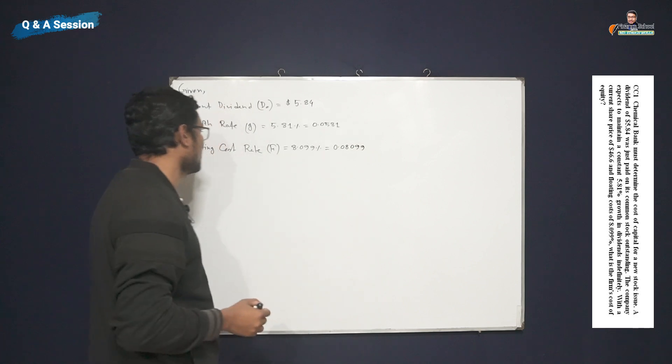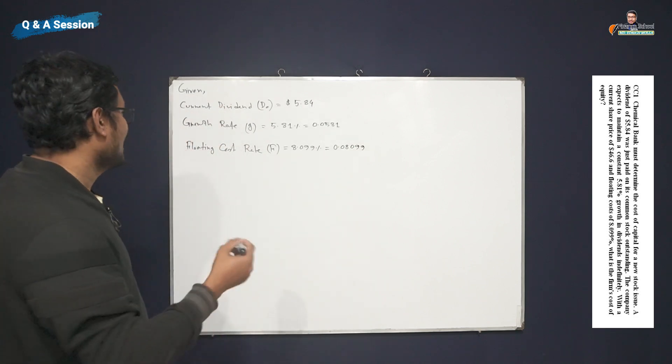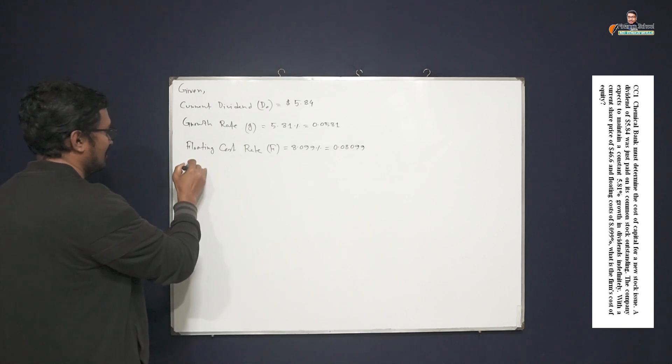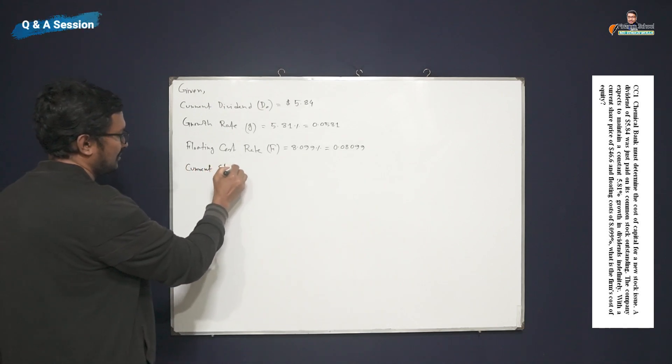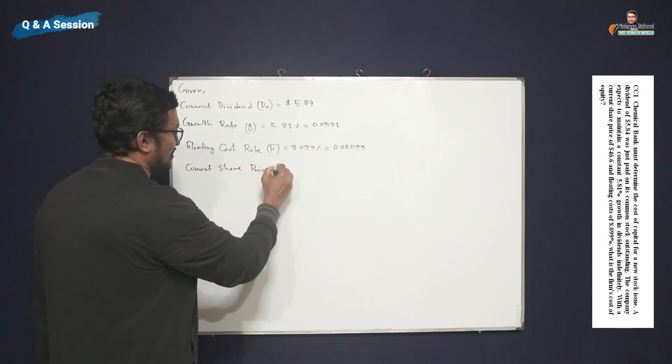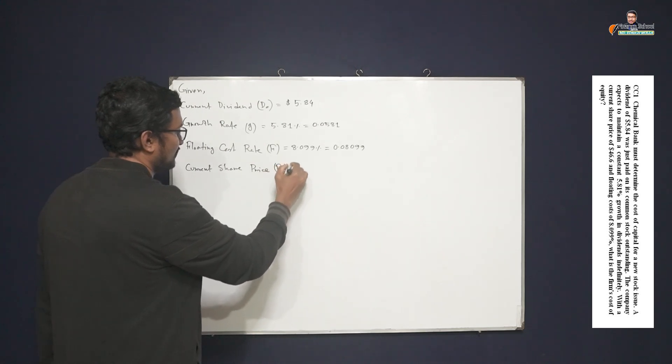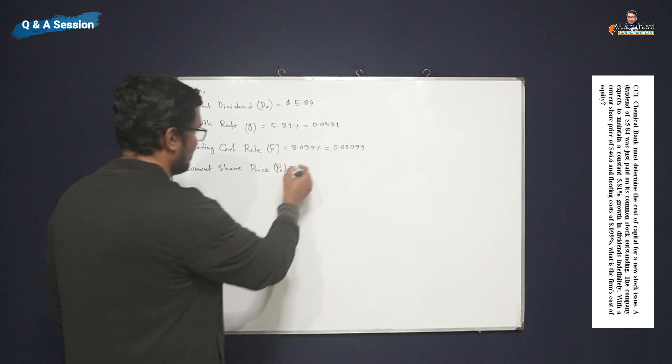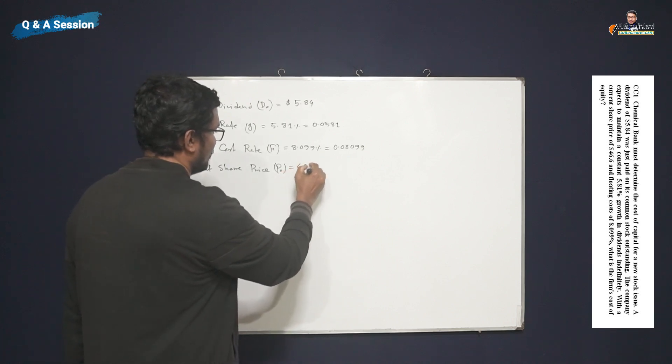So it will be the floating cost rate. And finally, as we can see, the current share price, which is denoted by P₀.